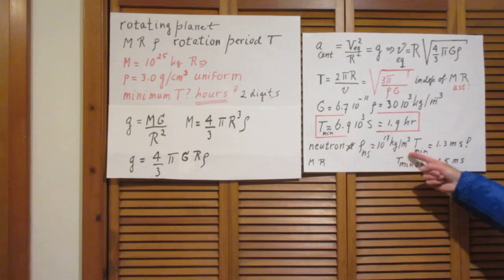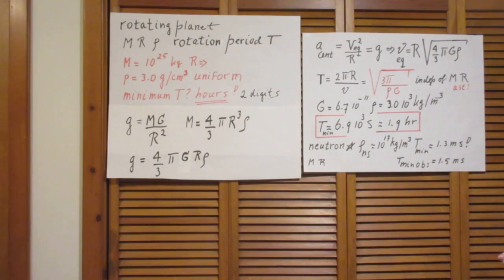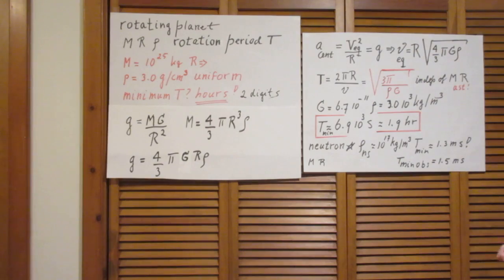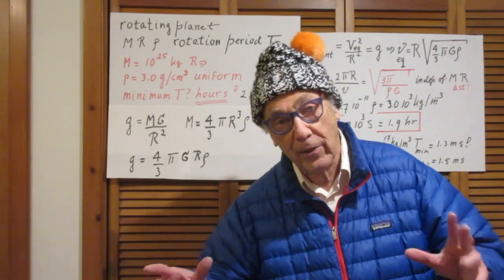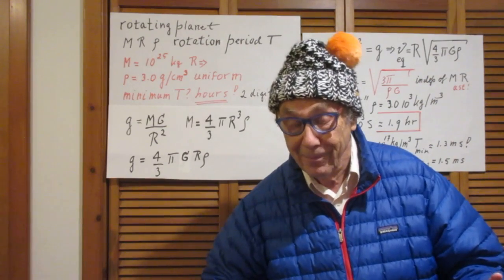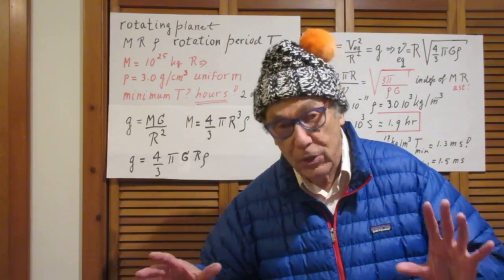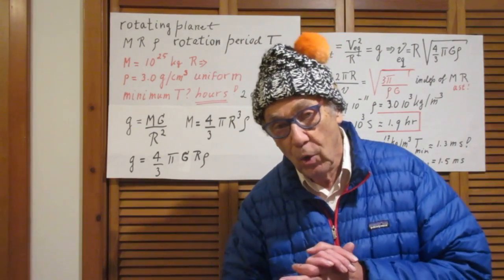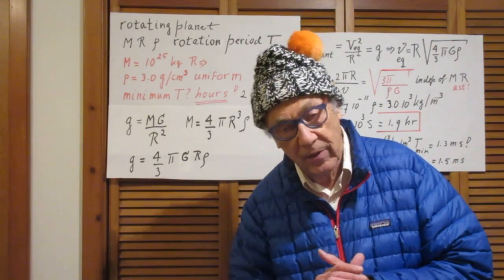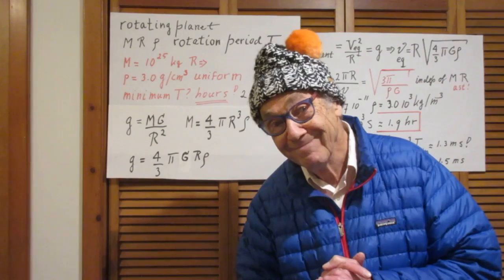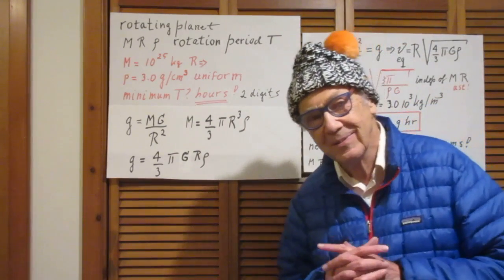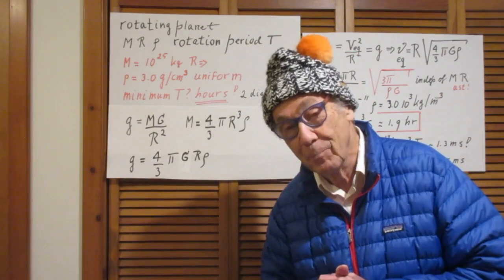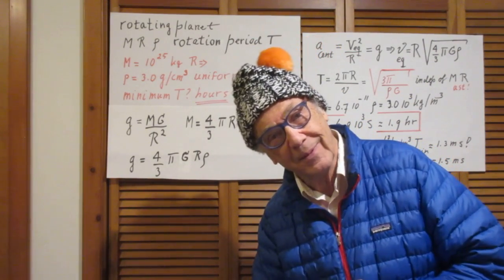10 to the 14 grams per cubic centimeter translates into 10 to the 17 kilograms per cubic meter. Sticking that into the equation, I find that the minimum period of rotation is about 1.3 milliseconds — using this very simple, back-of-the-envelope calculation. Yet it should interest you that the shortest period today found for rotating neutron stars — and all neutron stars rotate — is 1.5 milliseconds. Isn't it amazing how this simple relation holds even for neutron stars, provided you put in the approximately correct density?